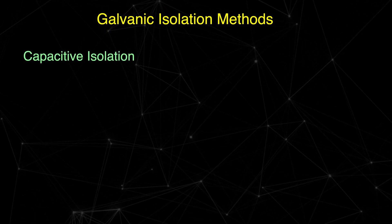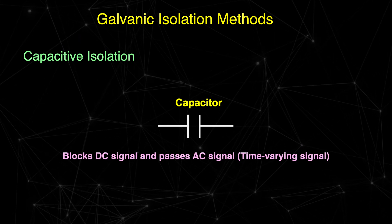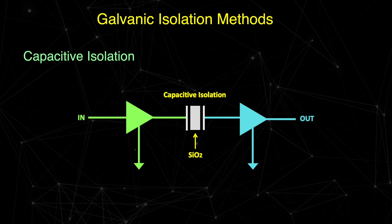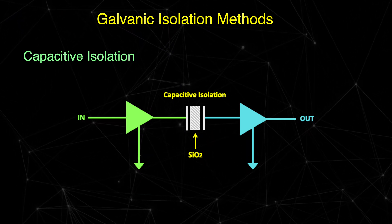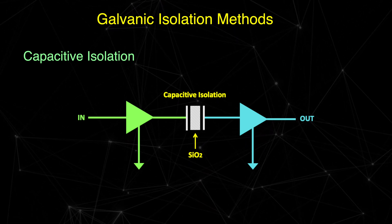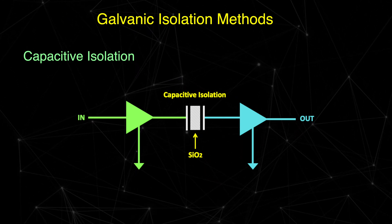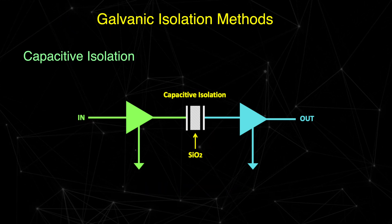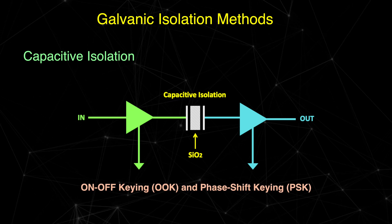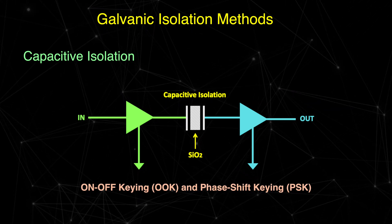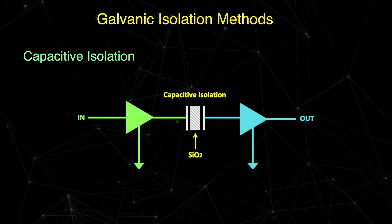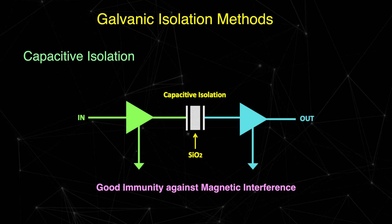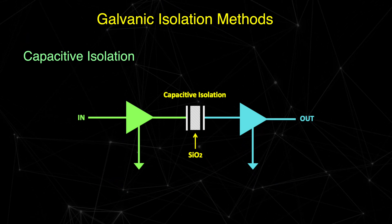The third type is capacitive isolation. As you know, a capacitor blocks the DC signal but passes the AC signal. Therefore, the capacitor can block DC current between two sub-circuits while being used to transfer AC or time-varying signals between them. This capacitive isolation uses silicon dioxide (SiO2) as the insulating barrier, which has high dielectric strength and is more stable at extreme temperatures compared to other dielectrics. Using modulation techniques like on-off keying or phase shift keying, it is possible to transmit AC signals from one side to the other, enabling high-speed signal transmission. Similar to optical isolation, capacitive isolation also provides high immunity against magnetic interference, but it has very low capability for power transmission.